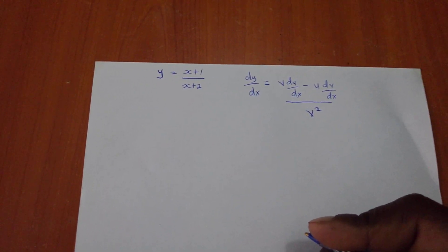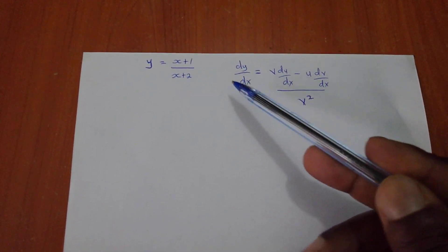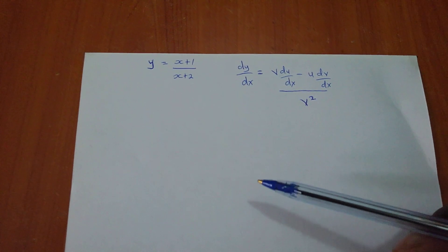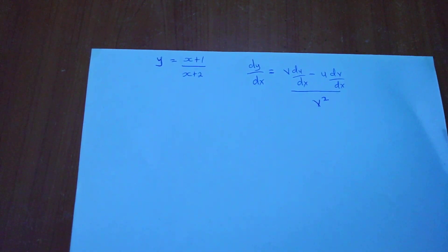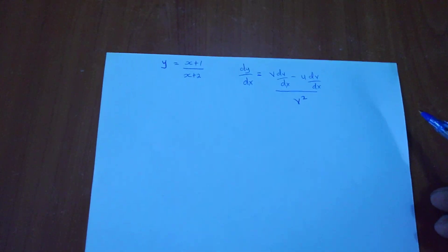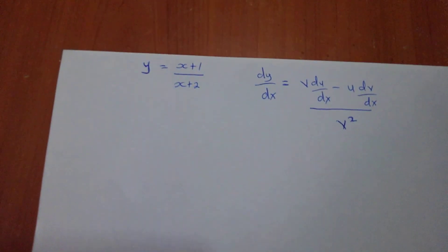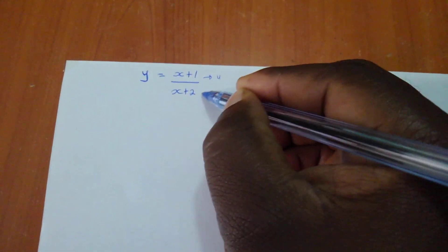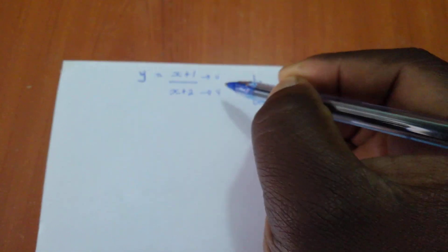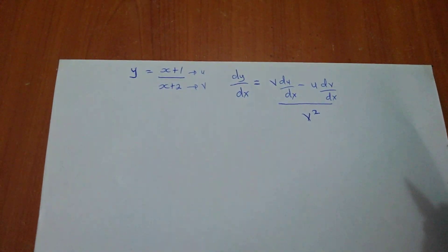Suppose we have y equals that expression, and we are going to use this expression for the quotient rule to differentiate. Remember, I told you earlier, there are first things we have to do. Before doing anything, we have to first identify u and v. That's the first step. So, this is kind of my side work.